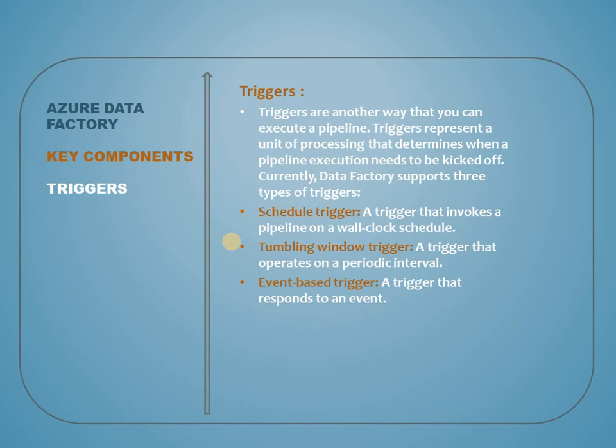Tumbling window triggers operate on specific periodic intervals. Event-based triggers fire whenever a certain event occurs, triggering the pipelines based on that event. We won't go deep into triggers now — in future videos we will create the required triggers to trigger our pipelines. This introduction will help you answer questions on triggers, integration runtime, and pipelines.